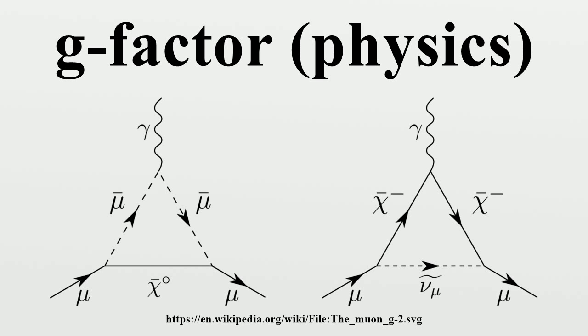Electron orbital g-factor: Secondly, the electron orbital g-factor, g_l, is defined by: where μ_l is the magnetic moment resulting from the orbital angular momentum of an electron, l is its orbital angular momentum, and μ_b is the Bohr magneton. The value of g_l is exactly equal to 1.